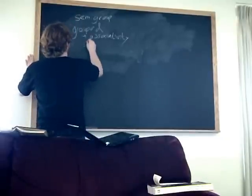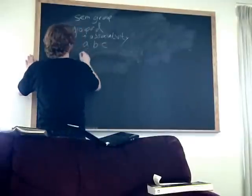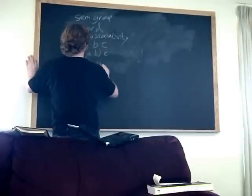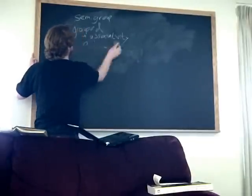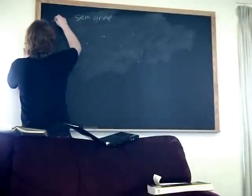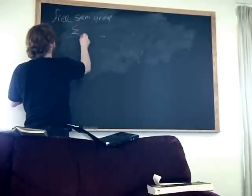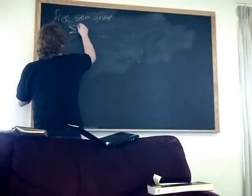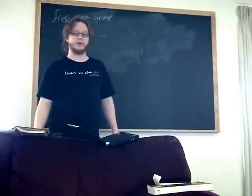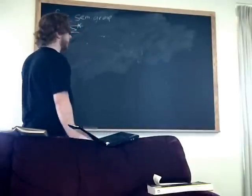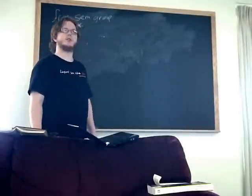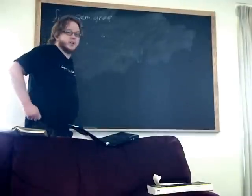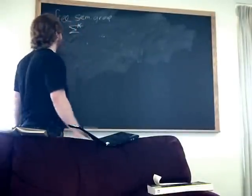A free semigroup — given an alphabet sigma, basically the semigroup would be over sigma; those are the elements. A free semigroup consists of elements in sigma-star, the star of the alphabet, which basically means all the words formed from that alphabet. If you have a finite number of elements, you can of course form an infinite free semigroup.